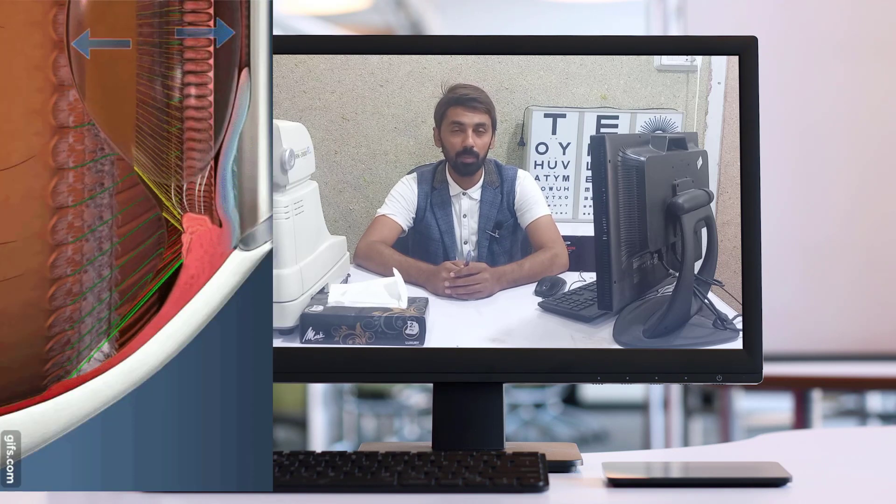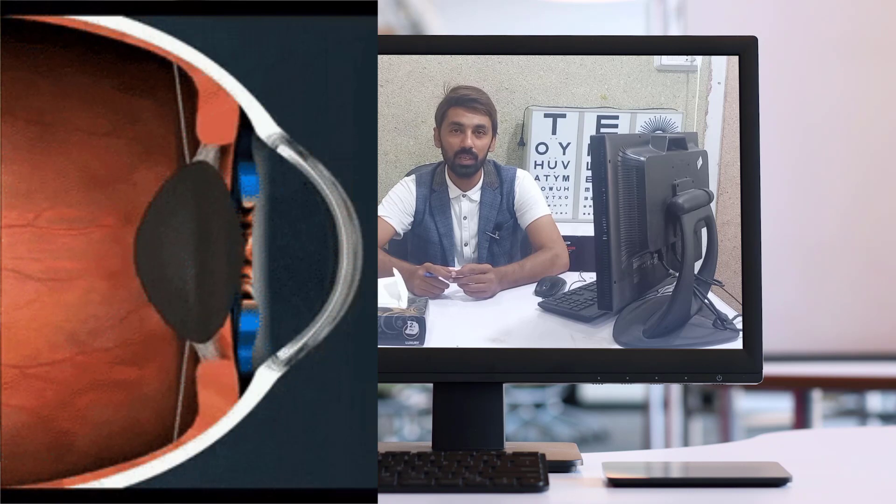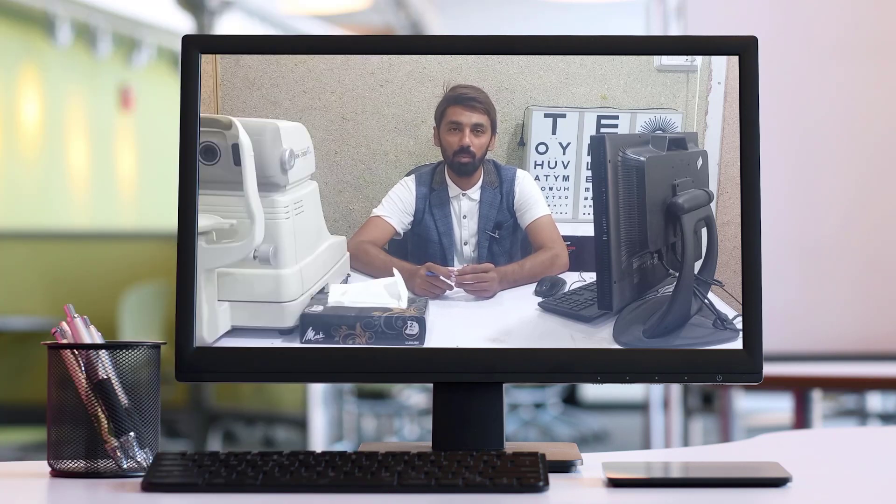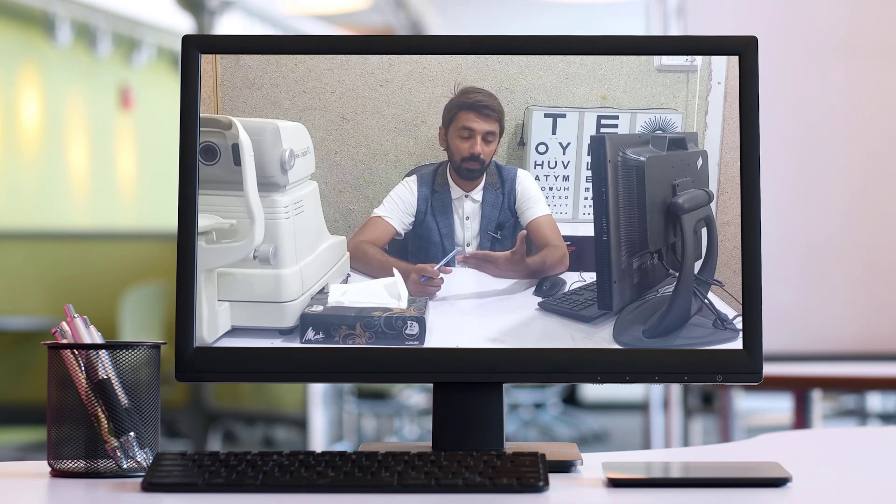Accommodation is defined as an increase in the dioptric power of the crystalline lens. The dioptric power of the crystalline lens is 15 diopters. During accommodation, this power increases — the lens becomes more convex and more globular, particularly the posterior surface, which increases its overall power.